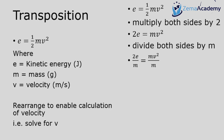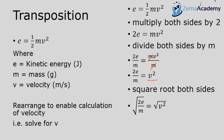Dividing both sides by m gives 2E over m on the left, and the m's on the right cancel, leaving 2E over m equals v squared. Since I want v, not v squared, I square root both sides: the square root of 2E over m equals v. I could also write this as 2E over m to the power of a half — don't forget that square root can be written as the power of one half.